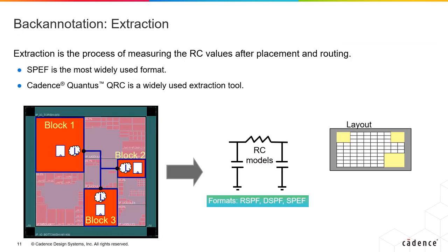Extraction tools can create models for your RC network using some sort of compression or reduction mechanism to generate either 2D models, 3D models, or 2.5D models of your layout. These RC models, when reduced, give you either the RSPF, DSPF, or the more commonly used SPEF — Standard Parasitic Exchange Format. This process is called extraction. The SPEF is the industry-wide standard format, and it is later converted into delays in Standard Delay Format (SDF) by the delay calculators. You can feed either the SDF or the SPEF back into your synthesis. This process is called back annotation.